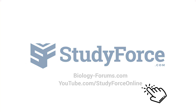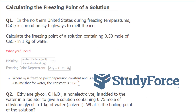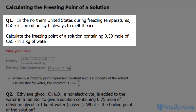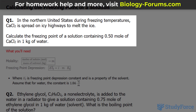In this lesson, I'll show you how to calculate the freezing point of a solution. Question 1 reads: in the northern United States, during freezing temperatures, calcium chloride is spread on icy highways to melt the ice. Calculate the freezing point of a solution containing 0.50 mol of calcium chloride in 1 kg of water.